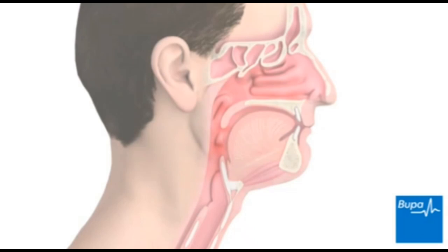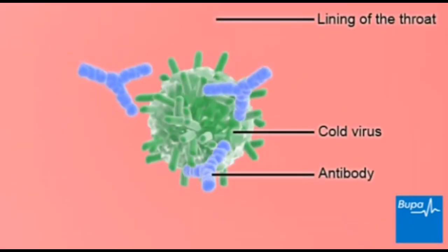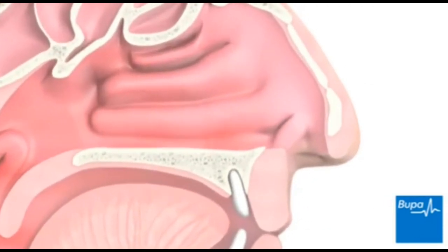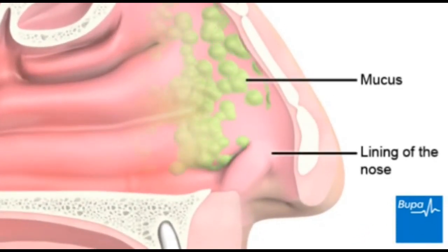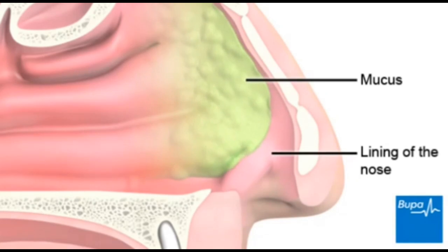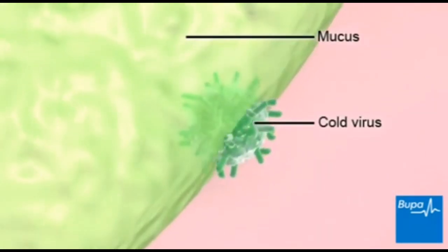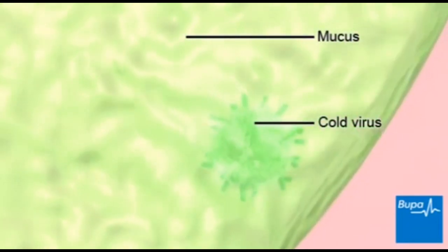Infection with a cold virus causes the immune system to produce antibodies which attach to the virus and destroy it. Your body also makes mucus which traps the viruses. You may swallow the viruses, so they are destroyed by the acid in your stomach, or they may be removed when you blow your nose.